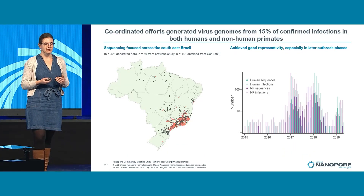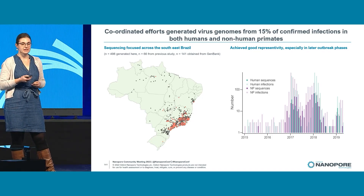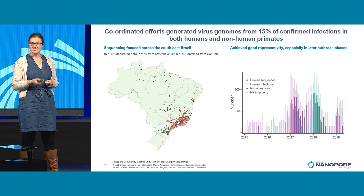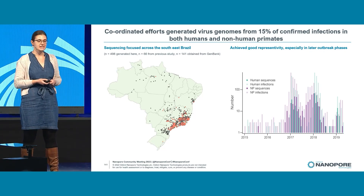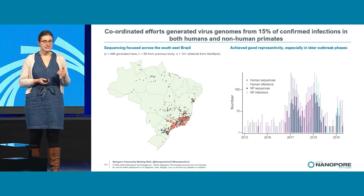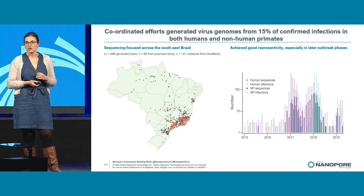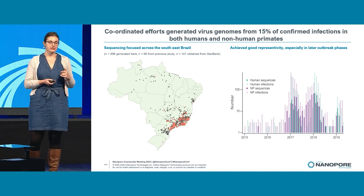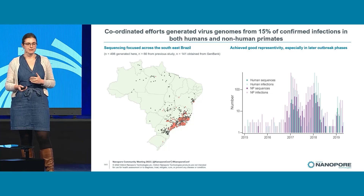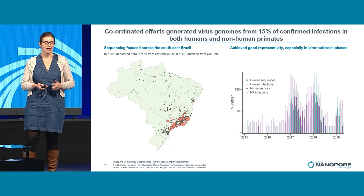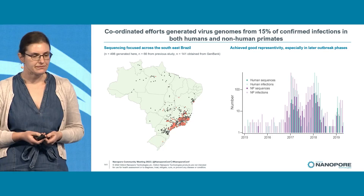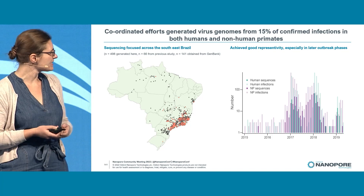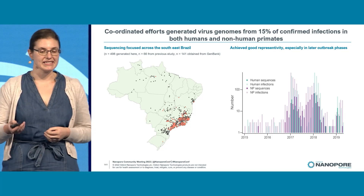With these coordinated efforts, we generated virus genomes from 15% of confirmed infections in both humans and non-human primates — 500 genomes in total — which triples the number of genomes available from this genotype of yellow fever virus in South America. Fifteen percent of confirmed infections is remarkably high for a wild animal reservoir, comparable to the best genomic representation seen in the most well-studied SARS-CoV-2 and Ebola outbreaks. We achieved good representativity throughout the entire affected area of Brazil and throughout time, including later outbreak phases.